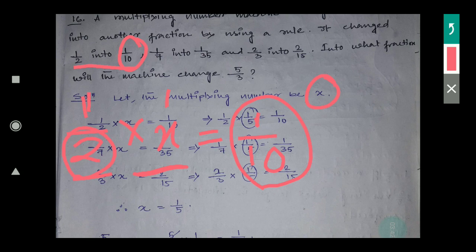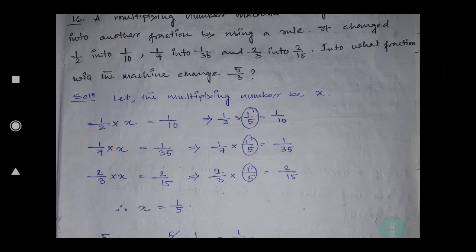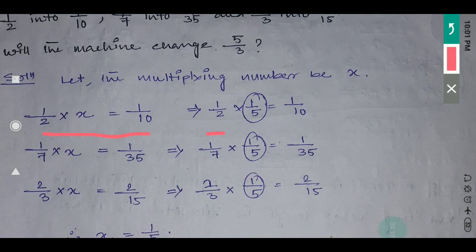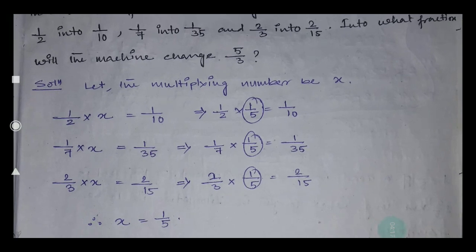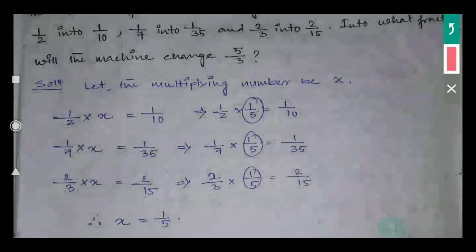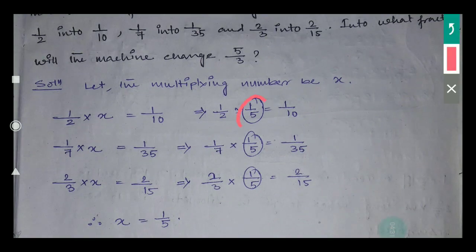So if I write 1/2 into 1/5, that gives 1 into 1 equals 1, and 2 into 5 equals 10, which matches. So x should be 1/5. Therefore: 1/2 into x equals 1/10 implies x equals 1/5. Similarly, 1/7 into 1/5 equals 1/35 — this also checks out. So the rule is that the machine multiplies every input by 1/5.